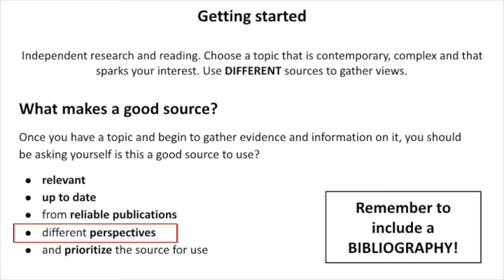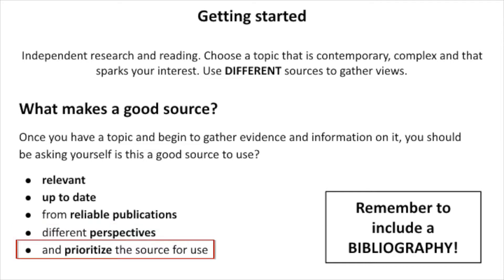Different perspectives is really important — this is a geographical issue, after all. You want to have different viewpoints, so different perspectives are an important part of looking for a good source. Also, try to prioritise the source for use, meaning don't just choose the first source that you see. Viewpoints are different ways of looking at the issue; they don't necessarily need to be for or against — you just want three different views that have a slightly different take on the same topic.